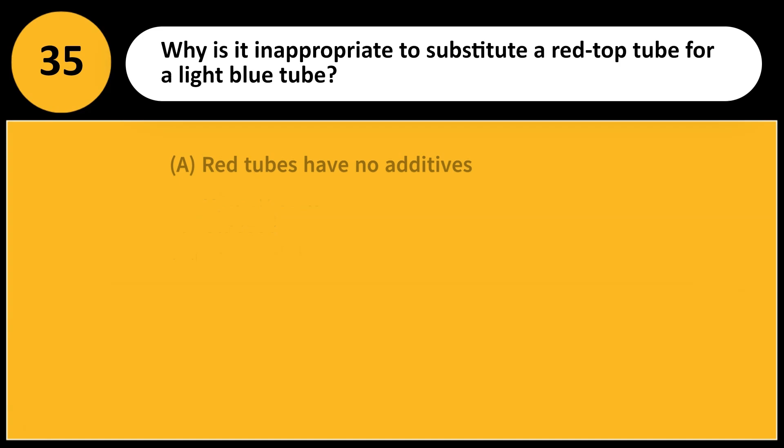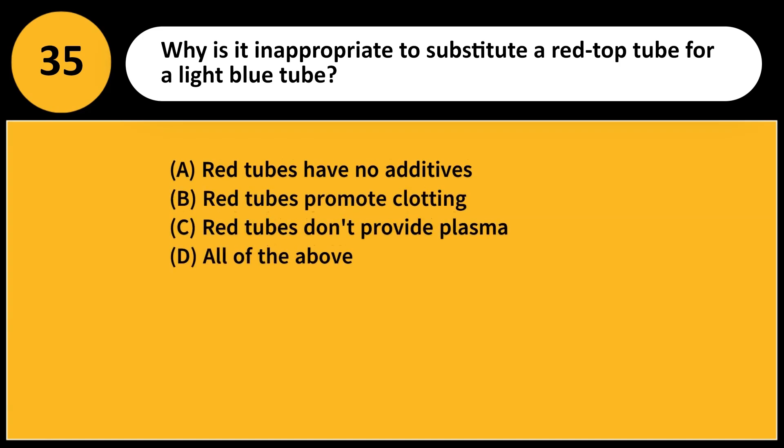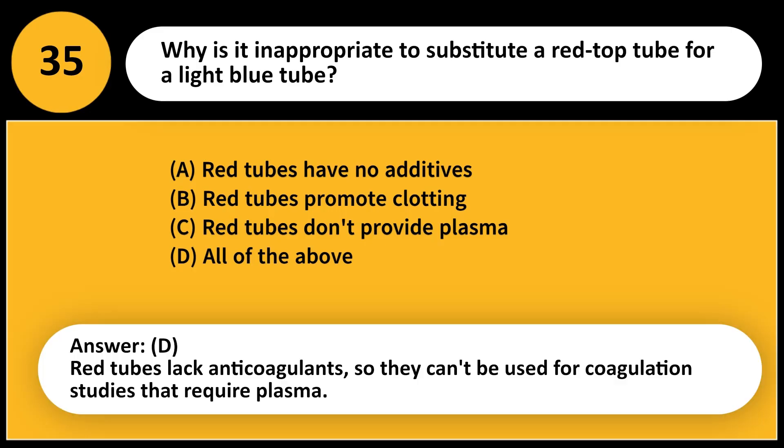Why is it inappropriate to substitute a red top tube for a light blue tube? A. Red tubes have no additives. B. Red tubes promote clotting. C. Red tubes don't provide plasma. D. All of the above. Answer: D. Red tubes lack anticoagulants, so they can't be used for coagulation studies that require plasma.